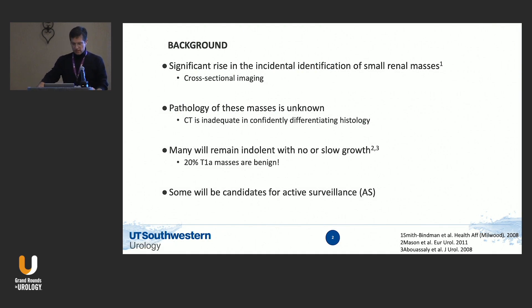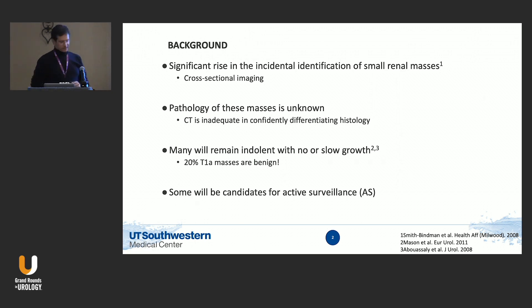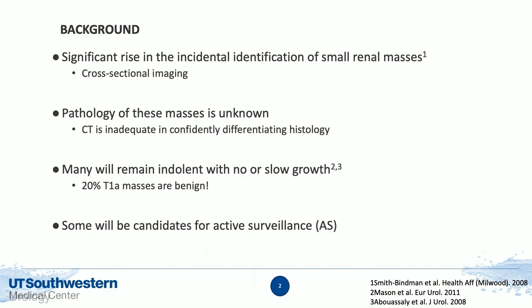For background, we have an increase in small renal masses based on the utilization of cross-sectional imaging. When we get an ultrasound or CT scan — certainly a single-phase CT coming from the ER — you don't know what to do. I don't repeat another CT. Instead of getting a triphasic CT, I'll get a triphasic MRI, as I'll share with you.